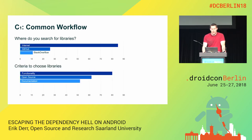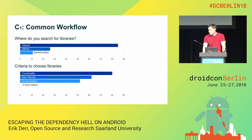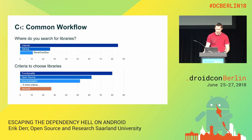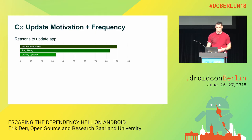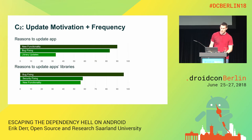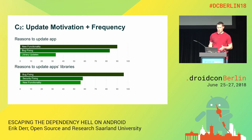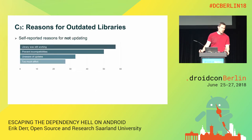Asking what criteria developers use to choose a library, most said functionality — it should do what they're looking for. Open source and documentation are also popular answers. But security and privacy were basically the answer from the least number of people. Regarding motivation to update, almost every developer said bug fixing. Only a few said security fixing, and new functionality wasn't relevant for most.